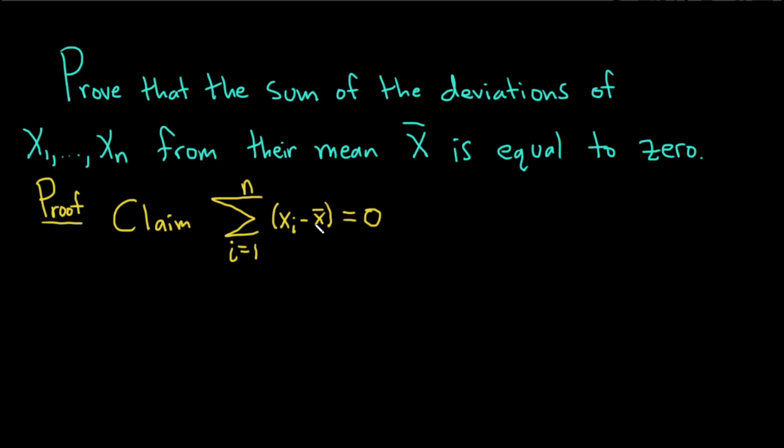The sum of the deviations of the x i's from their mean x bar is equal to 0. Okay, so to do this, what we're going to do is just we're going to write it out. So note,